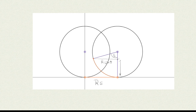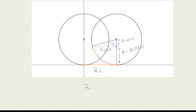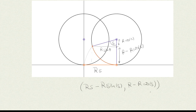The height of this point: we take the radius R and subtract R cosine of S, giving us R minus R cosine of S. So the coordinates of this point are derived as follows - the x-coordinate is R times S minus R sine of S, and the y-coordinate is R minus R cosine of S. Now let's go to Desmos and see how to reproduce and animate this.